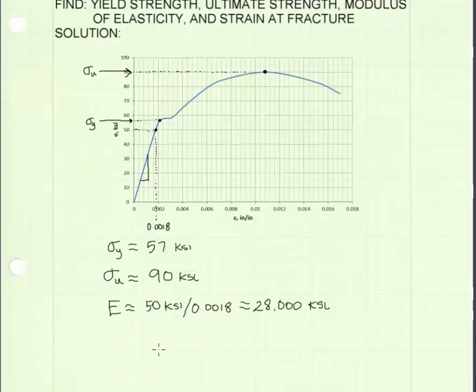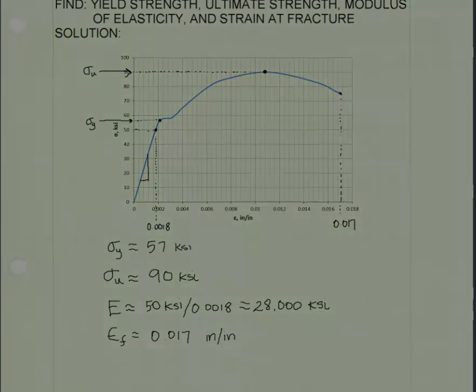The last value we're interested in is the strain at fracture. This material fails at the end of the stress-strain curve. This is associated with a strain value of 0.017 inches per inch. And we're done.